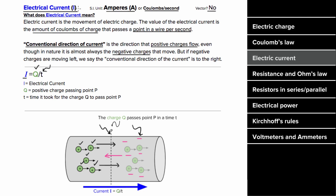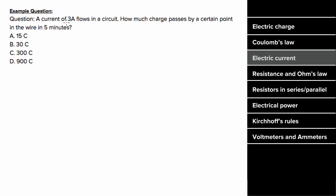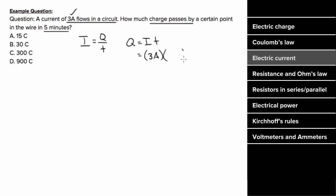So what's an example problem involving electrical current look like? Let's say three amps flows within a circuit. How much charge would pass by a point in that wire during a time interval of five minutes? Well, we know the definition of current is the charge per time, which means the charge is gonna be the amount of current multiplied by the time. So we take our current of three amps, and we multiply by the time, but we can't multiply by five because that's in units of minutes. Since amps is Coulombs per second, we've got to convert five minutes into seconds, which would be 5 times 60 seconds per minute, giving us a total amount of charge of 900 Coulombs.